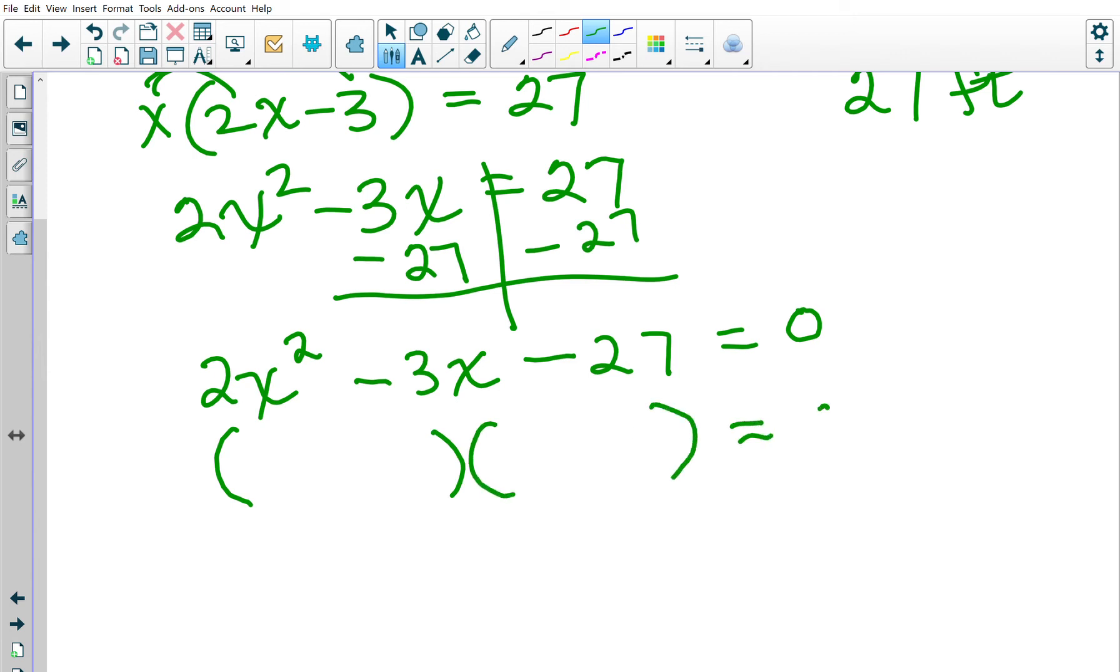The only way to get 2X squared is to multiply 2X times X. Then you would probably have to take a couple guesses on this negative 27. I'm going to try negative 9 and positive 3. If I check using FOIL, there's 2X squared, my outside is 6X, my inside is negative 9X, so that works.